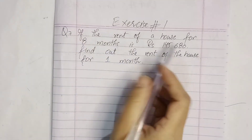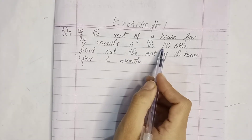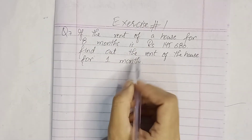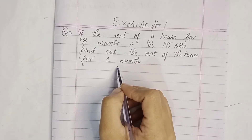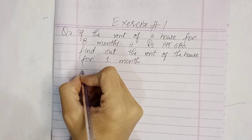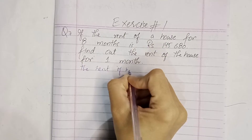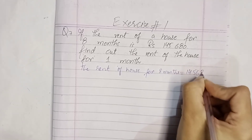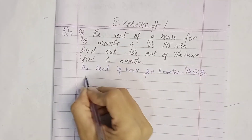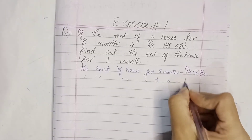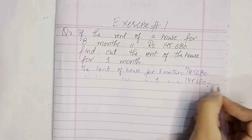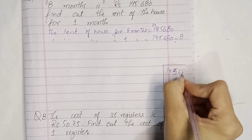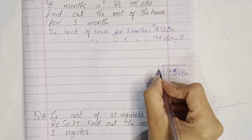Question number 7: if the rent of a house for 8 months is rupees 145680, find out the rent of the house for one month. They have given us 8 months and we have to find one month's rent. The rent of house for eight months is rupees 145680. The rent for one month: divide 145680 by 8.